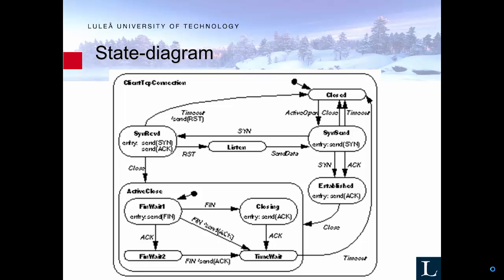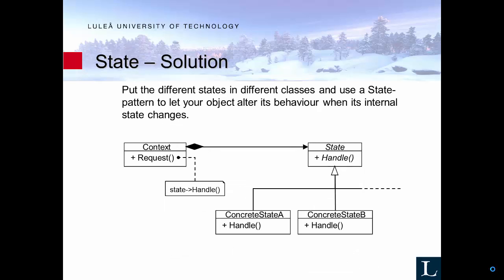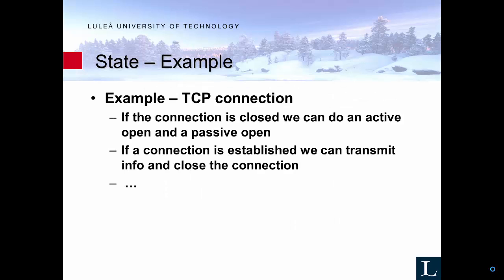Here's an example of a TCP client connection. At the closed state you can call active open to get to the SYN sent state, or timeout to go to passive open. From there you can go to established, and from established you can close the connection and so on. Each different state has a very specific transition and you know which functions to call to get to each state. We use polymorphism here: we have a base State and concrete implementations A and B.